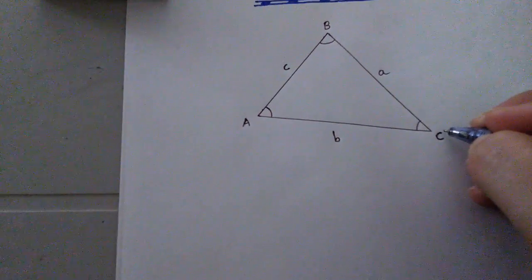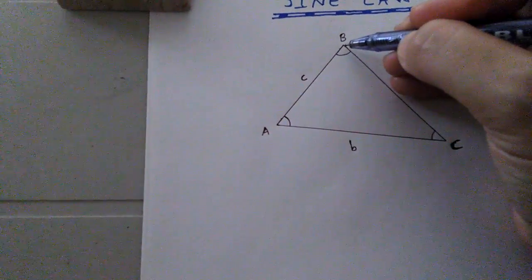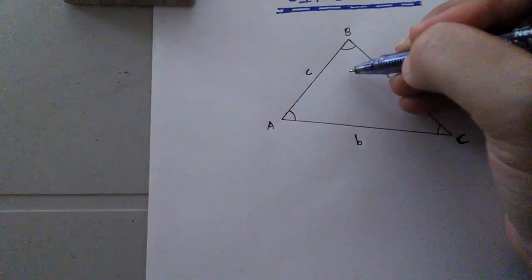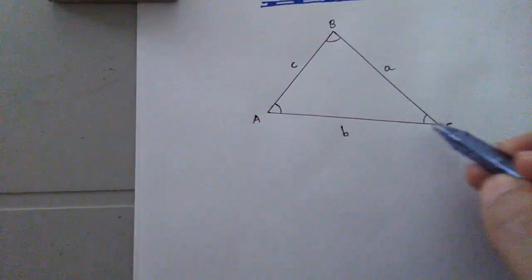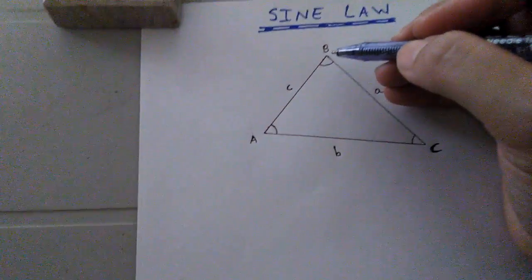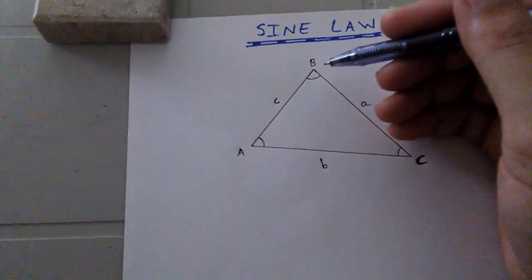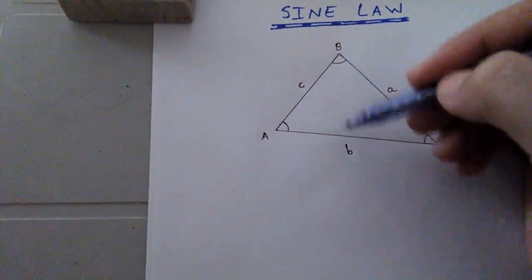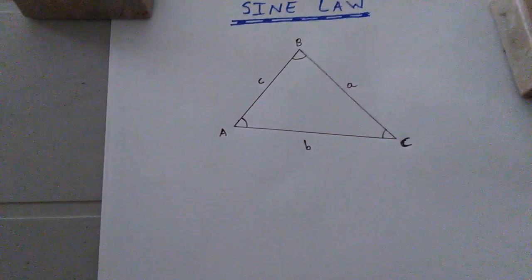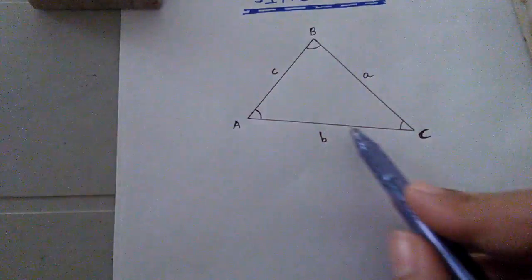Now I am going to construct an altitude of this triangle by dropping a perpendicular line exactly on AC from vertex B. I can either use a compass or a ruler. I prefer to use a compass to draw the altitude accurately, and I will remove those construction arcs afterward. Let us draw the altitude from vertex B falling perpendicularly on AC.